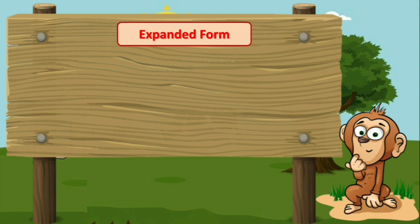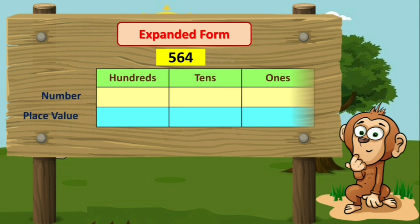So, children, let us quickly revise the concept of place value, which we learnt in our last class. One number is given here: 564. In the given number 564, we have five hundreds, so we will write five in the hundreds place. We have six tens, so we will write six in the tens place. Then we will write four in the ones place, as we have four ones.